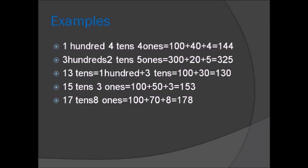Three hundreds, two tens, five ones equals three hundred plus twenty plus five equals three twenty-five. Thirteen tens, one hundred plus three tens equals one thirty.